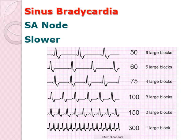On the ECG slide, counting the number of large blocks between QRS complexes — 1, 2, 3, 4, 5, and 6 — the distance between two QRS complexes is six large blocks, which is commensurate to a heart rate of 50 beats per minute. So, the problem in sinus bradycardia is that the heart rate is slow, which is why it is referred to as bradycardia.